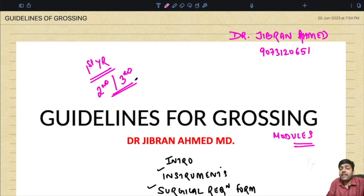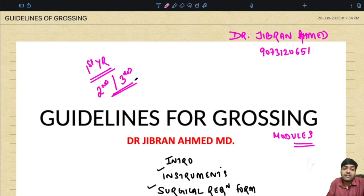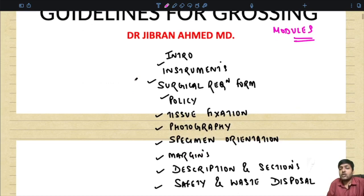Grossing is the first step in histopathology. It is an art of taking a very representative section. If you are not doing the grossing properly, you might not be able to report that particular histopathological specimen. You need to understand the concept of representative samples — only when you give proper representative samples will you be able to report a particular specimen correctly.